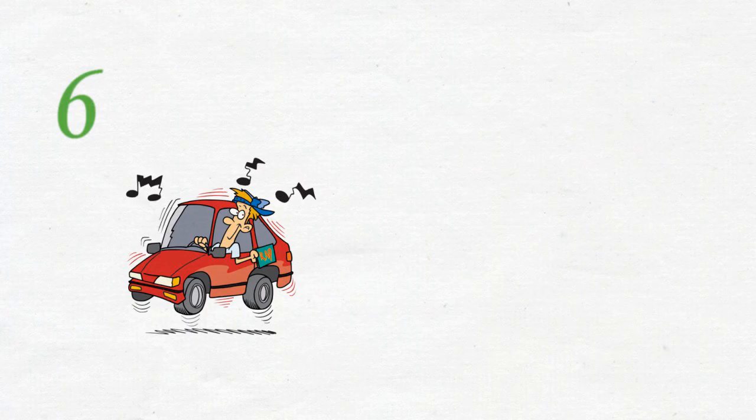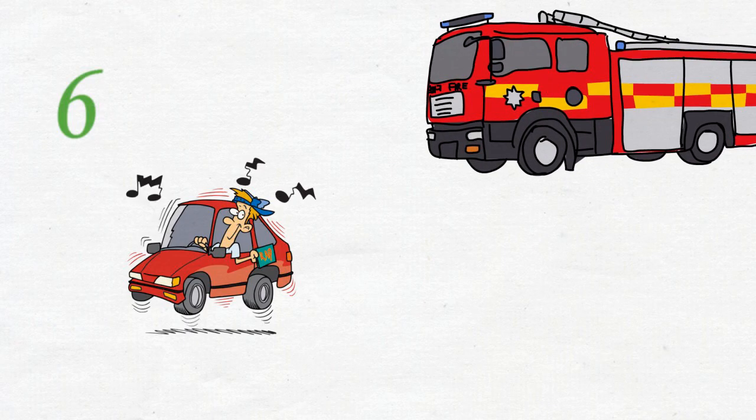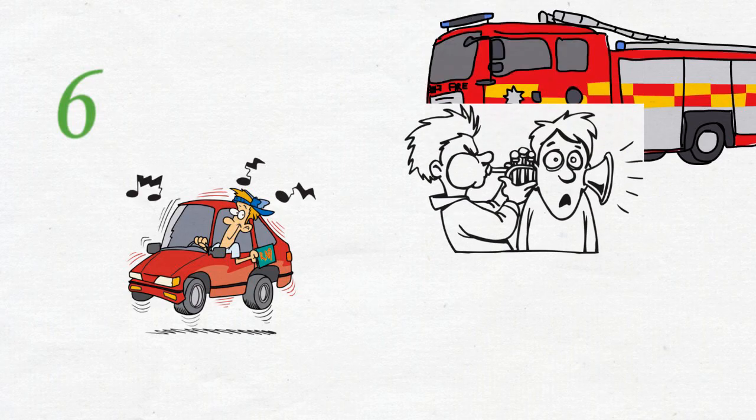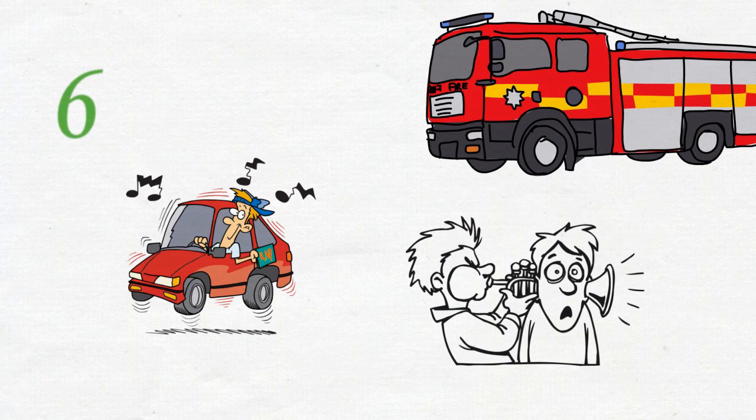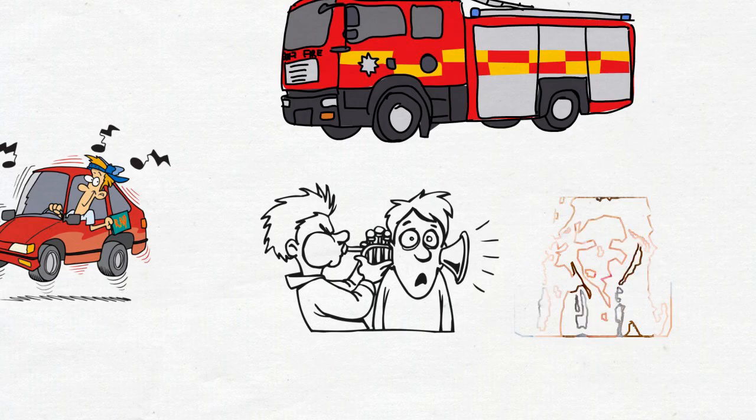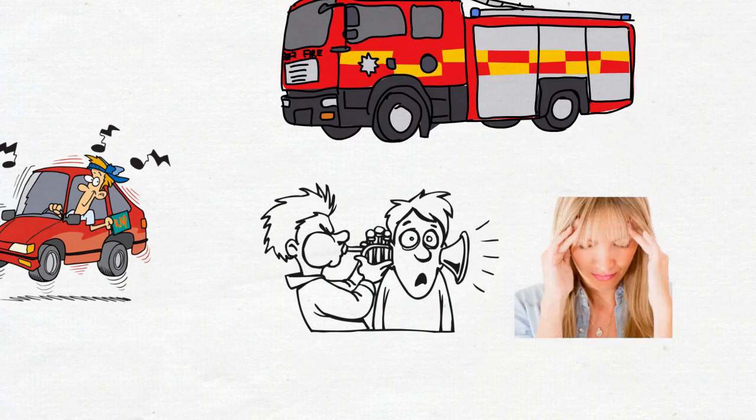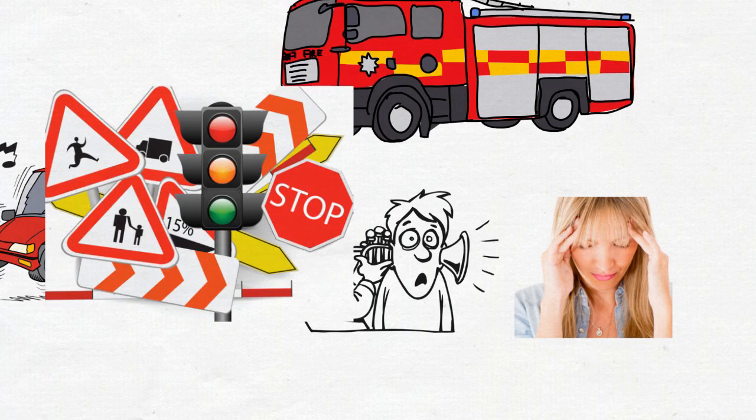6. Having music on too loud. Loud music makes it almost impossible to hear sirens and horns that are used to alert drivers. Also, the louder the tunes, the harder it is to concentrate on the task of operating a vehicle. Research has shown that drivers are twice as likely to run a red light or have an accident while listening to loud music.